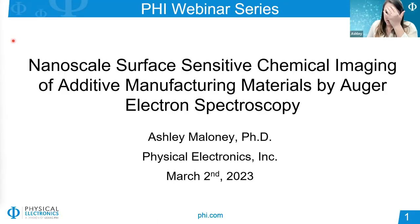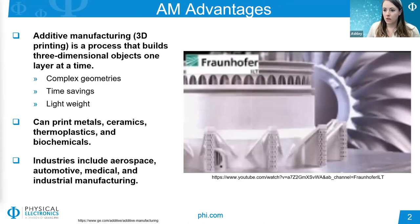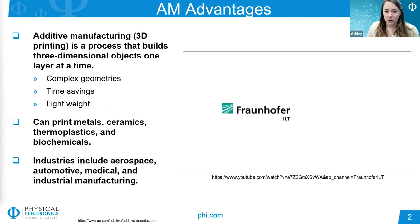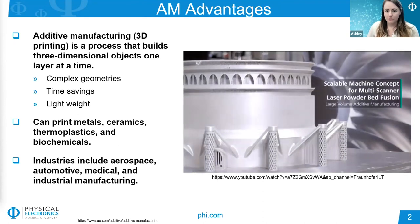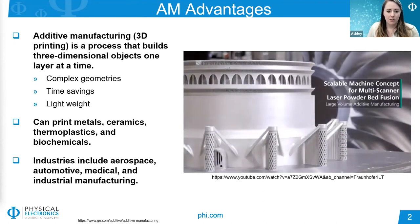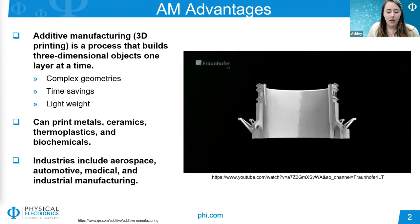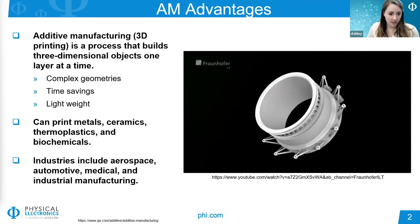We'll be talking about how we can use Auger electron spectroscopy to analyze additive manufacturing materials. Additive manufacturing, or more commonly known as 3D printing, is a process that constructs three-dimensional objects one layer at a time. In this video, you'll see an example of how laser powder bed fusion was used at Fraunhofer in collaboration with Rolls-Royce to make an oil transfer coupling of an aircraft engine.